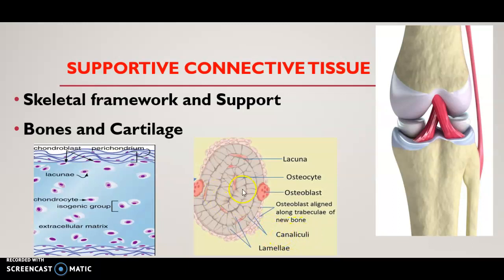Canaliculi interconnect all the ring-like structures. The cells of the bone are called osteocytes, while the cells of the cartilage are known as chondrocytes. Chondrocytes are suspended in a fluid-filled space known as lacuna. In bone also you can see lacuna, which are fluid-filled spaces.